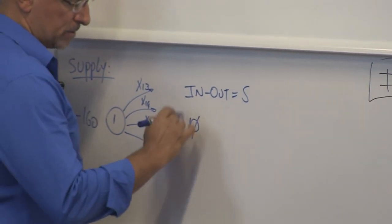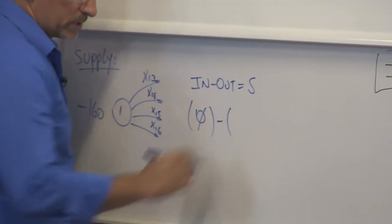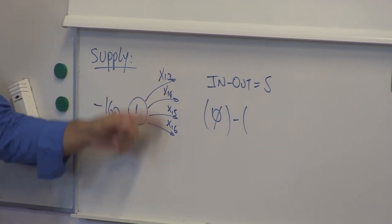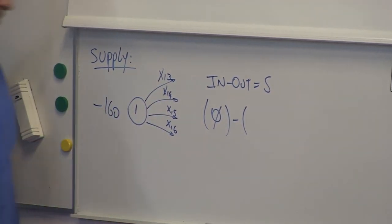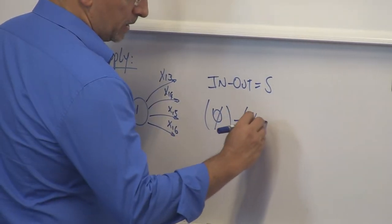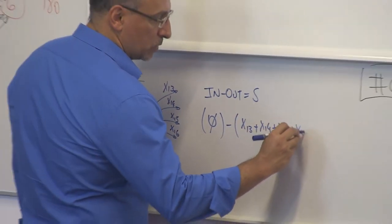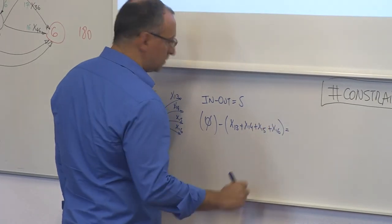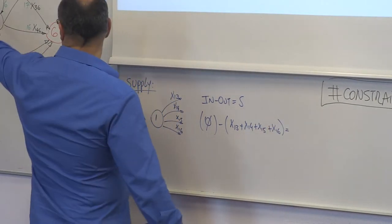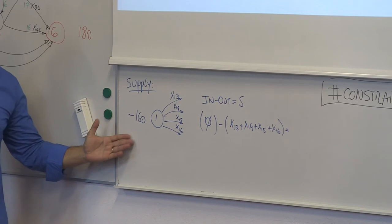Zero coming in minus what's coming out, four different amounts, right? So X_13 plus X_14 plus X_15 plus X_16 has to be equal to supply, supply minus 160, minus 160 equals minus 160.